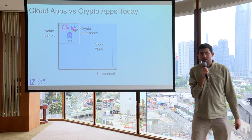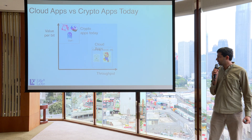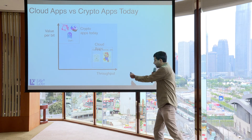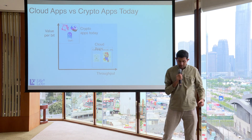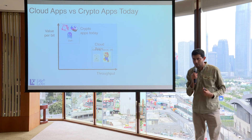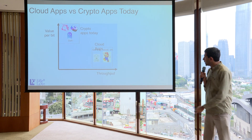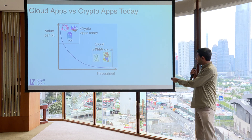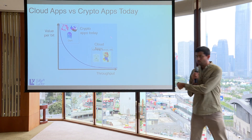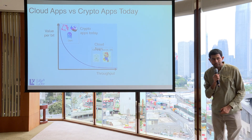But if you look at cloud, a lot of the most valuable applications are actually very low value per bit — each tweet is not worth much, but Twitter or Facebook together is worth a lot. So that's the interesting regime that we have to move to as crypto, to enable consumer applications.